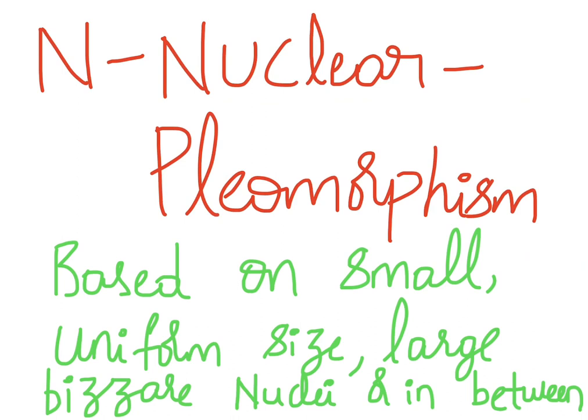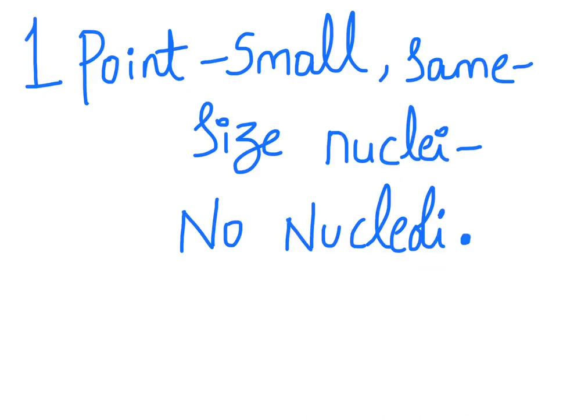N refers to nuclear pleomorphism, based on whether there are small uniform size nuclei, large bizarre nuclei, or nuclei in between. Nuclear pleomorphism is categorized into three points. One point is given when the nuclei are of small, same size with no prominent nucleoli.